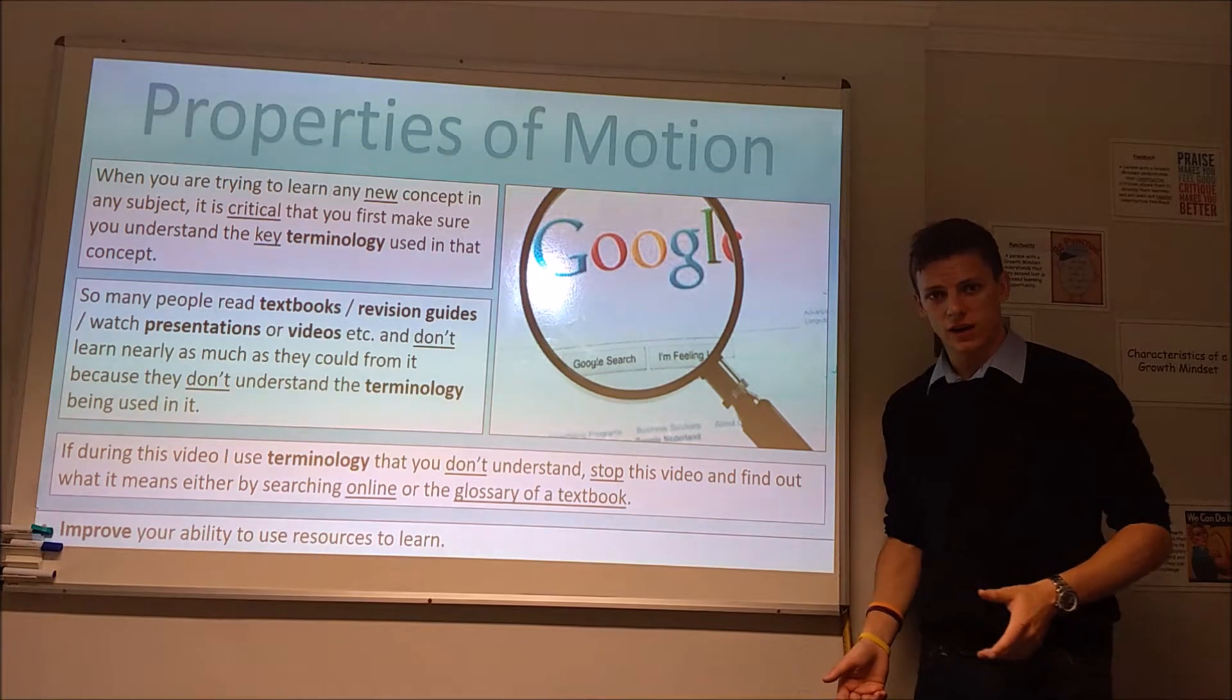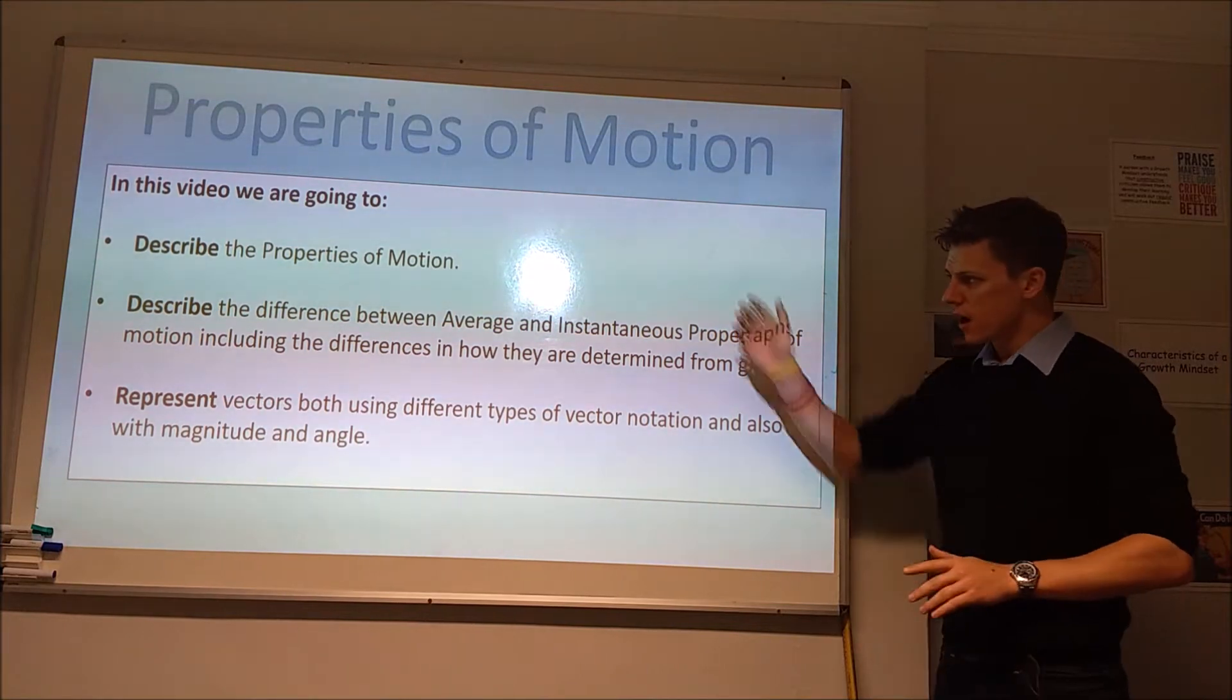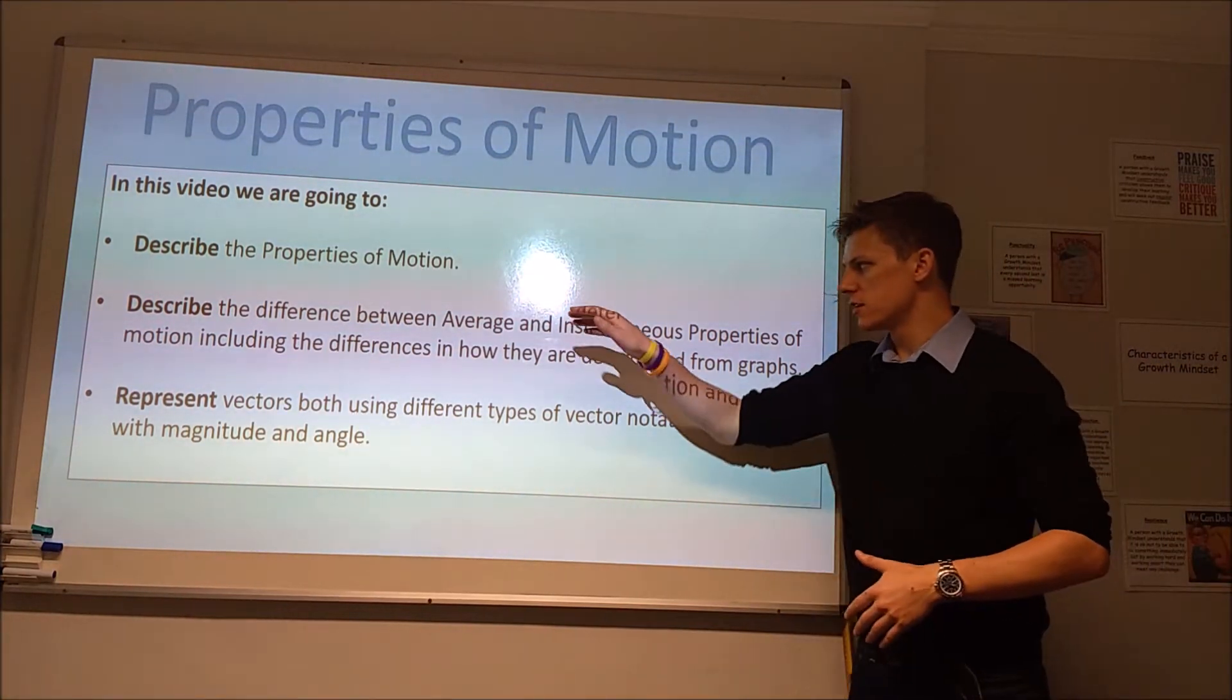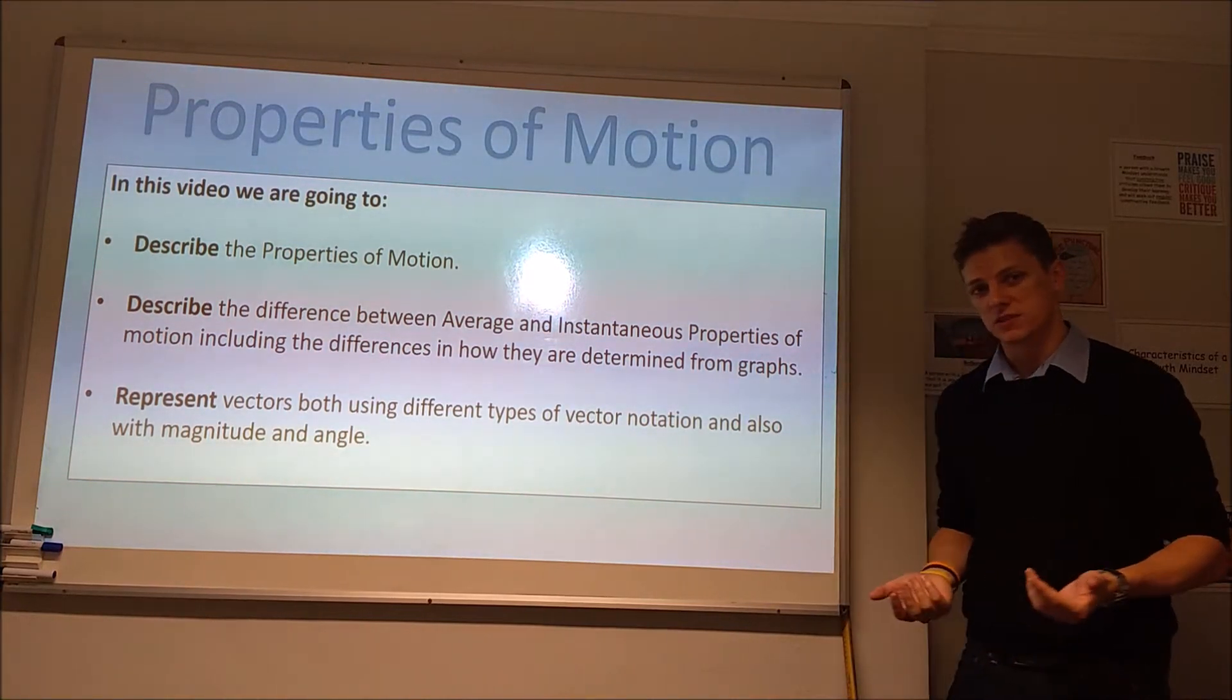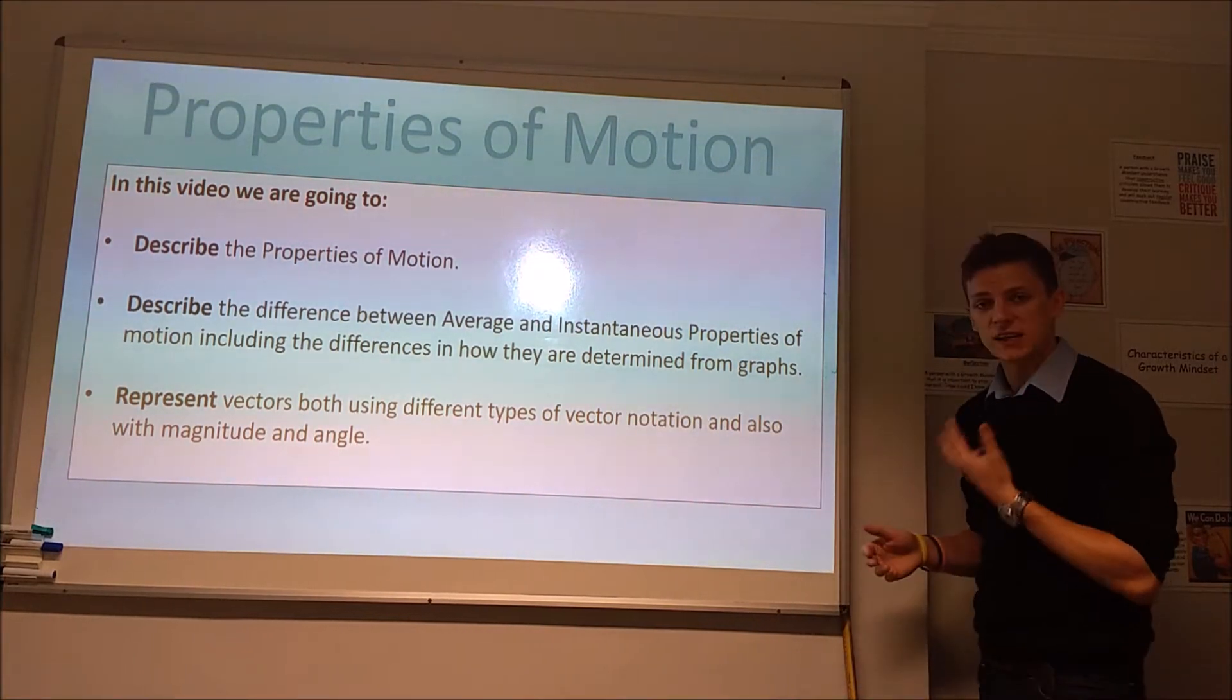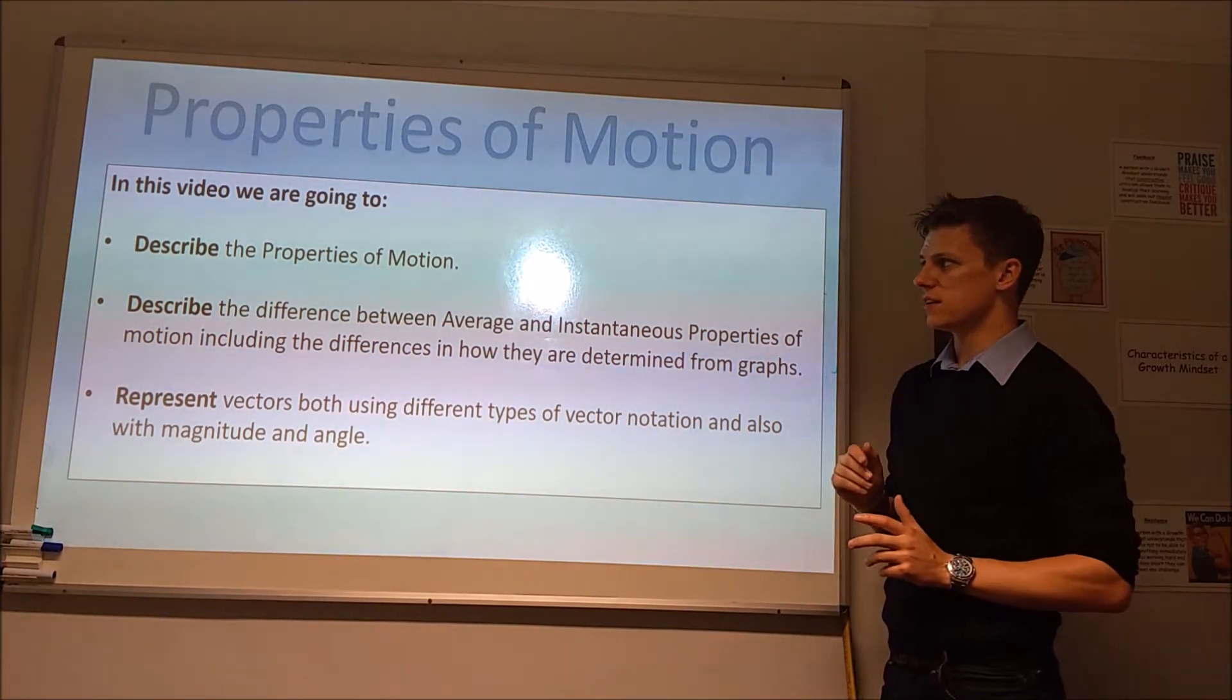But let's crack on and look at the properties of motion. In this video I'm going to look at what the different properties of motion are, and then split some of those properties down further. I'm going to look at average velocity and instantaneous velocity and the difference between those two. Then we're going to look at what a vector is and how we can represent them using vector notation and also represent them using magnitude and angle.